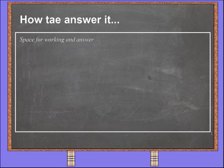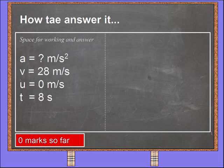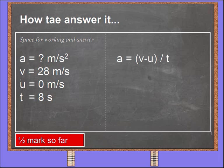You usually have a wee space where it says 'space for working and answer.' That means you do your working and your answer — it doesn't mean you just stick down your answer. What I do first is draw a wee line down the middle to separate into two columns. Then I stick down my I for Information. For this question, I'm working out acceleration in metres per second squared — that goes at the top with a wee question mark. Then I've got V for final speed: 28. U for initial speed: 0 — because it starts from rest, remember, when it says starts from rest, that means 0. And T for time is 8 seconds. I've not got any marks so far because that's just my I bit, my information — you get nothing for that, but it keeps you right. Then we do our E for Equation — in this case it's V minus U over T for acceleration. You get a half mark for that.